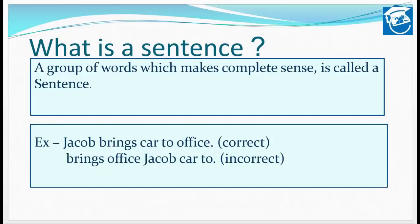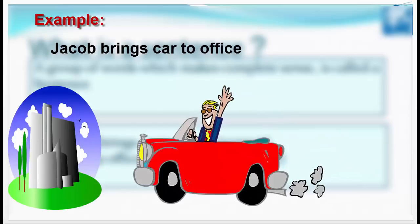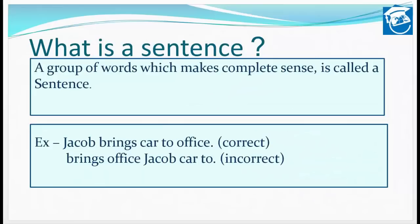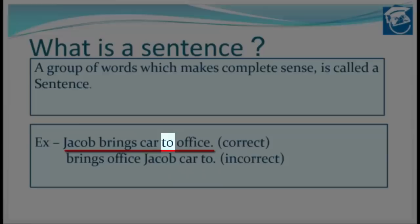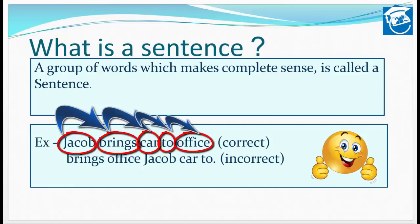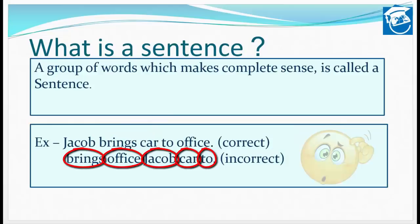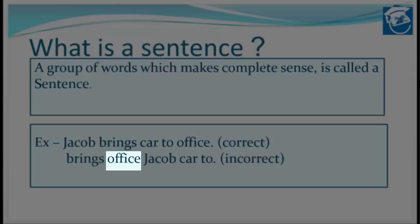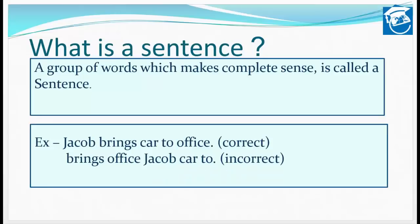For example, 'Jacob brings car to office' — here there are five words and it is making sense. But if the words are randomly arranged, like 'brings office jacob car to,' it is not making sense and cannot be called a sentence. But if any words are properly arranged, it definitely becomes a sentence. Now let's see the types.